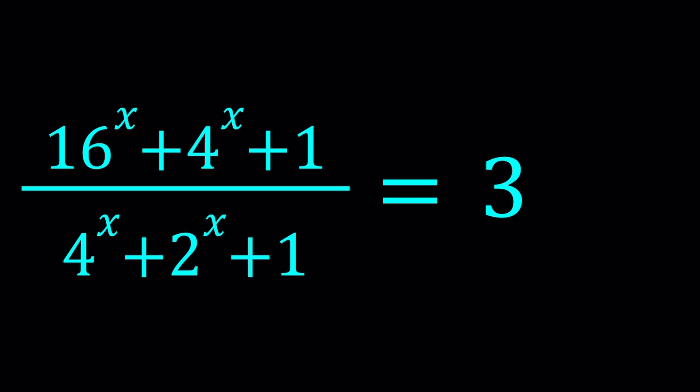Now, we can go ahead and just cross multiply to see what happens. This is going to give us 16 to the x plus 4 to the x plus 1 equals 3 times 4 to the x plus 3 times 2 to the x plus 3.